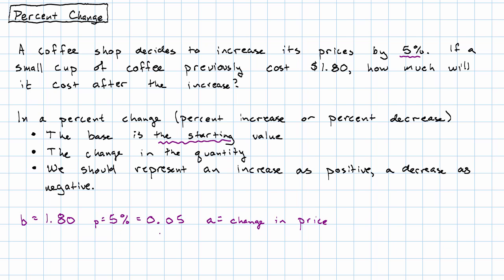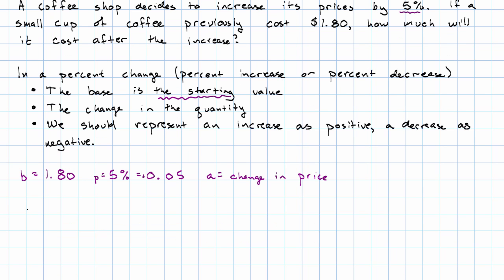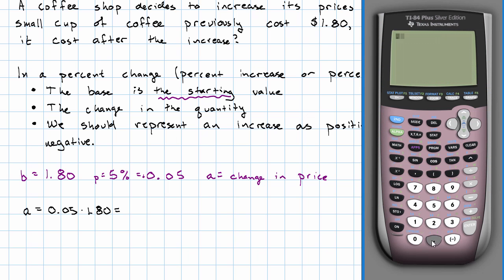Since I want to get a positive change, I'm expressing my percent as a positive 5%. So my unknown change is 5% times $1.80, which works out to 0.05 times 1.8, which is $0.09.